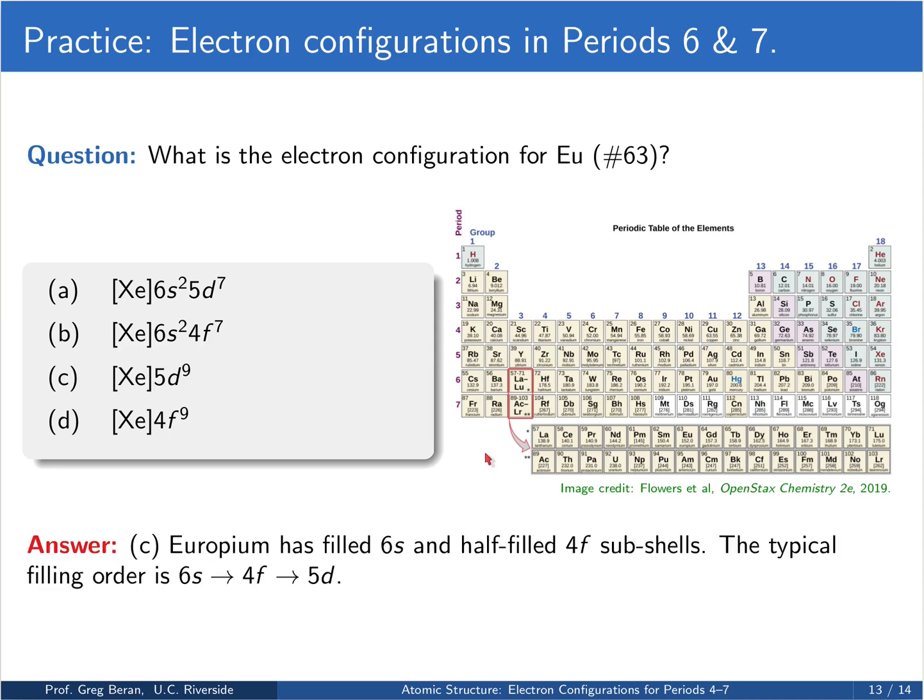Alright, in this case we have a filled 6s, and then we've started filling the 4f's, and we're 1, 2, 3, 4, 5, 6, 7 electrons into that, so we expect a 6s2, 4f7 configuration. And then we filled again the f's before the d's, so it's not a 5d7, it's a 4f7. In general, the lanthanides and actinides down here fill the f electrons.